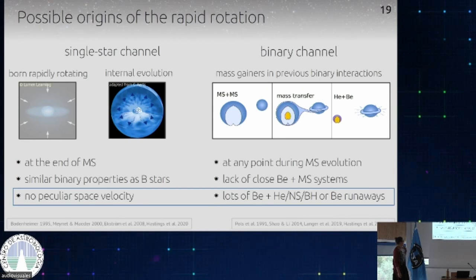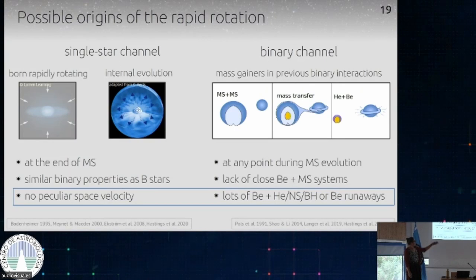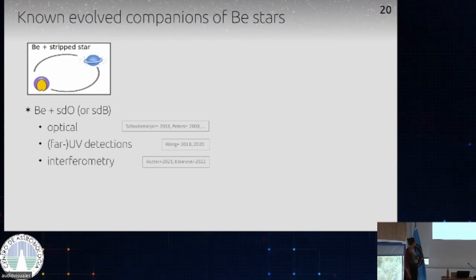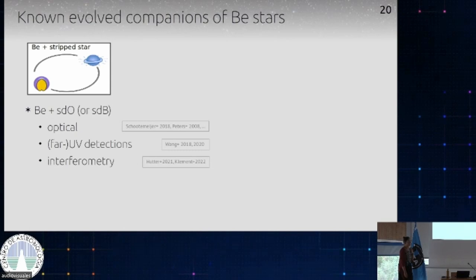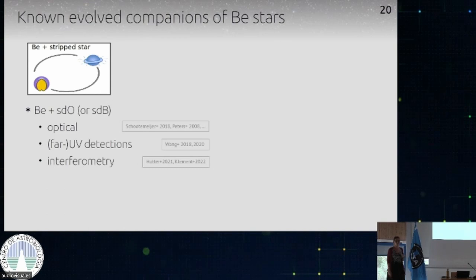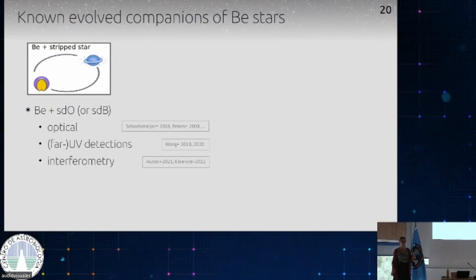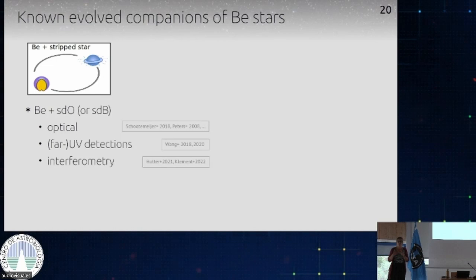Let's look at the companions that were found next to BE stars. If they should be single stars, they should behave like normal B-type stars. If they come from the binary channel, there should be stripped stars or compact objects as companions to BE stars, and some BE stars should be runaways after a supernova disruption. We do know a few systems that have stripped star companions — subdwarf O or B stars (sdO or sdB), which we think were stripped in a previous binary interaction. Using UV observations and interferometry, there's a handful — maybe 20 — where we know there is a BE star and a subdwarf companion.